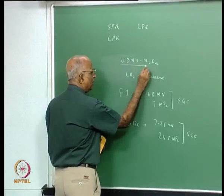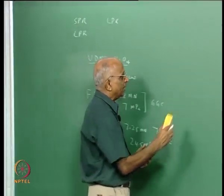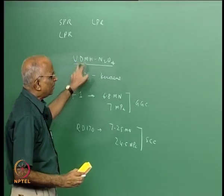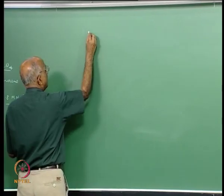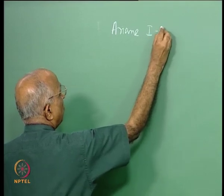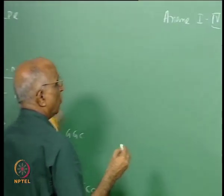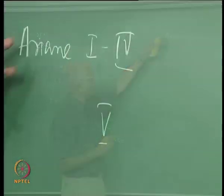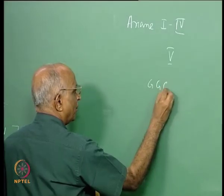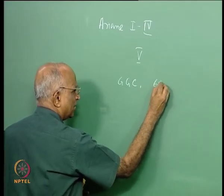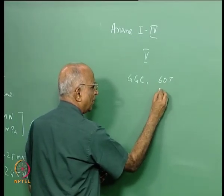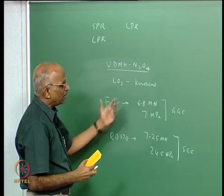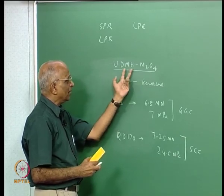In India we started with UDMH/N2O4, which the French also used earlier in their Ariane launch vehicles for boosters. But since UDMH is cancer-causing and costly, the trend is not to use it. Ariane 1 to 4 made use of UDMH/N2O4, but the more recent Ariane 5 does not. Ariane 5 uses a derivative with a gas generator cycle, with a typical thrust of around 60 tonnes and chamber pressure of about 58 to 62 atmospheres (5 to 6 MPa).